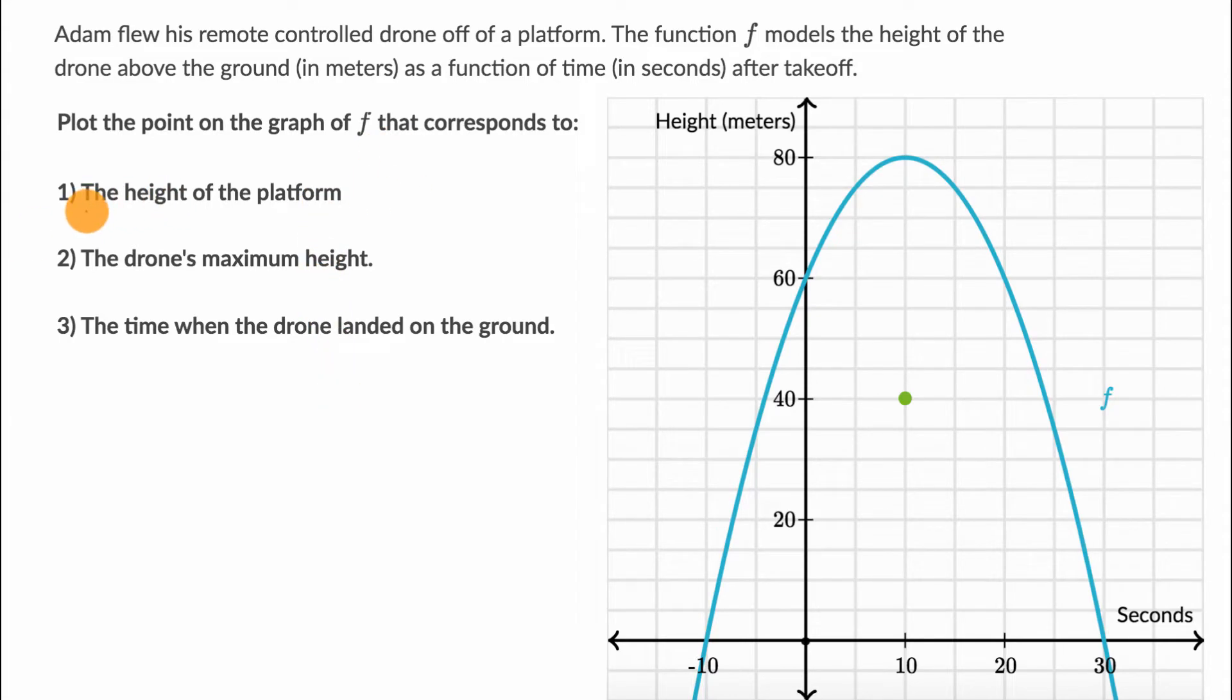The first thing here is the height of the platform. The drone is at the height of the platform right when it takes off, because it says Adam flew his remote controlled drone off of a platform. What is the time that the drone is taking off? Well, that's going to be at time t equals zero right over here. And what is the height of the drone at that moment? It is 60 meters.